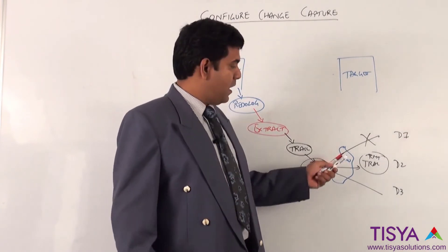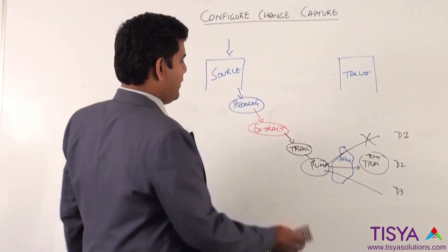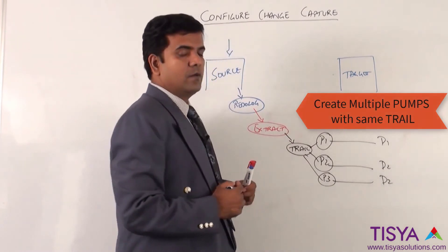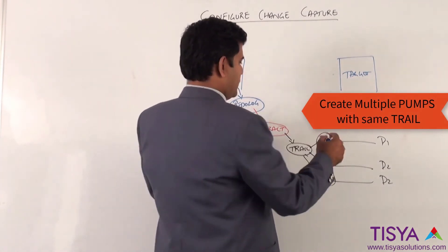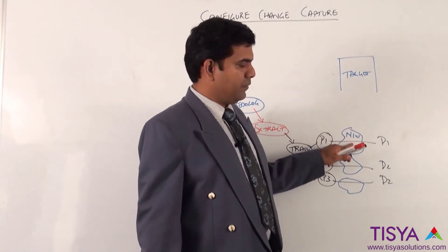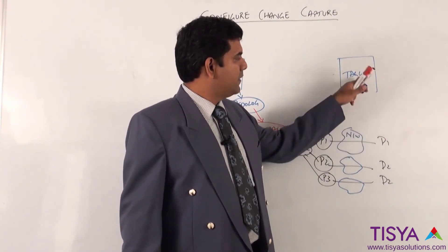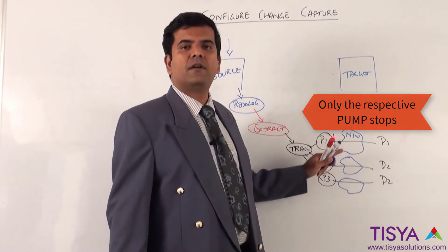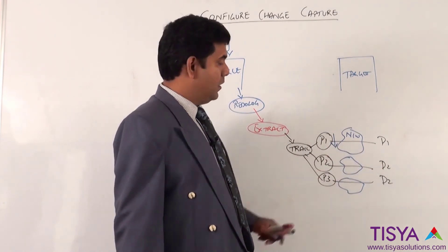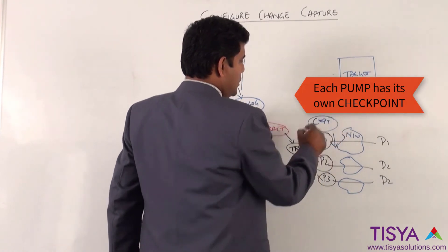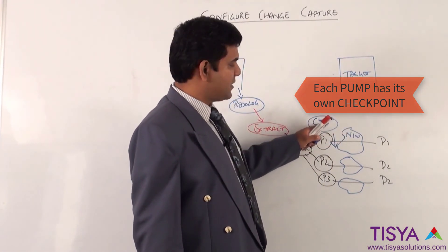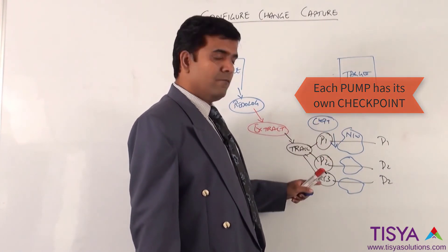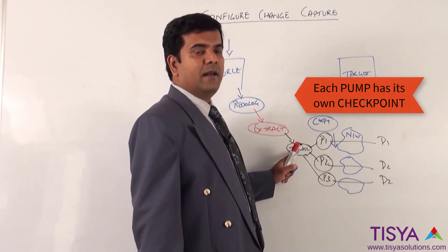The alternative when you have multiple destinations is to create one trail and start separate pumps, each reading from the same trail and sending data to individual destinations over the network. If destination one is not reachable or GoldenGate on destination one is not running, pump one would stop but pump two and pump three would continue pumping to their respective remote destinations. Each pump has its own checkpoint, so even though they read from the same trail, each one knows from where it needs to resume if it stops.